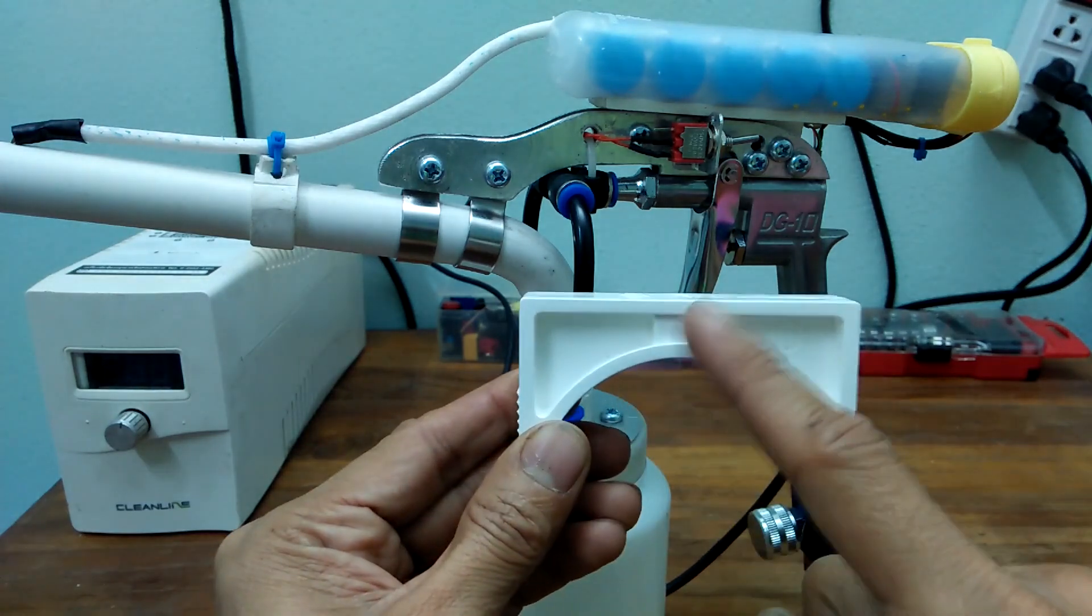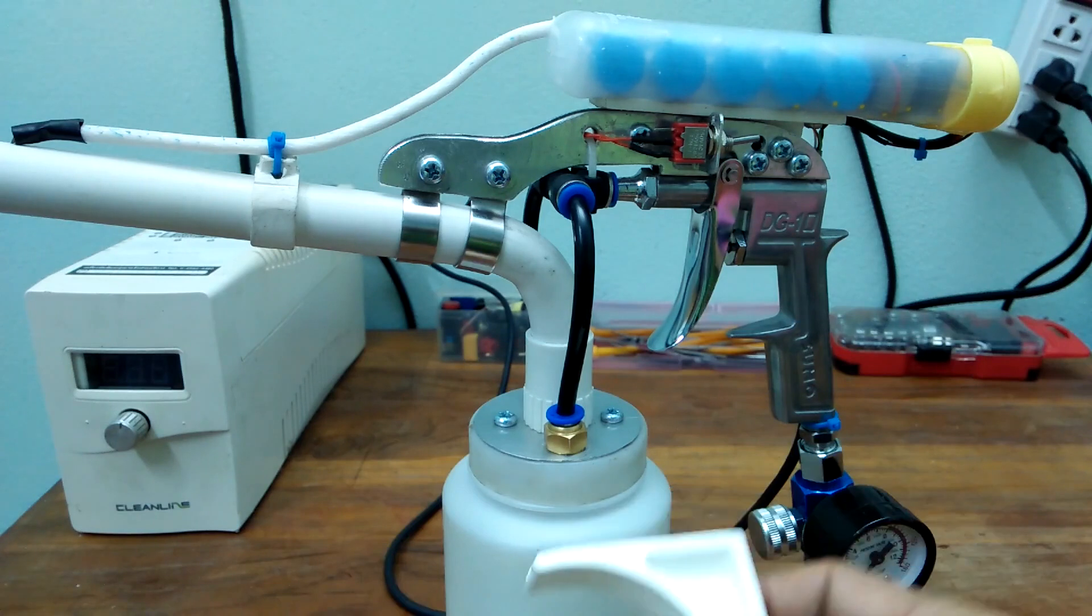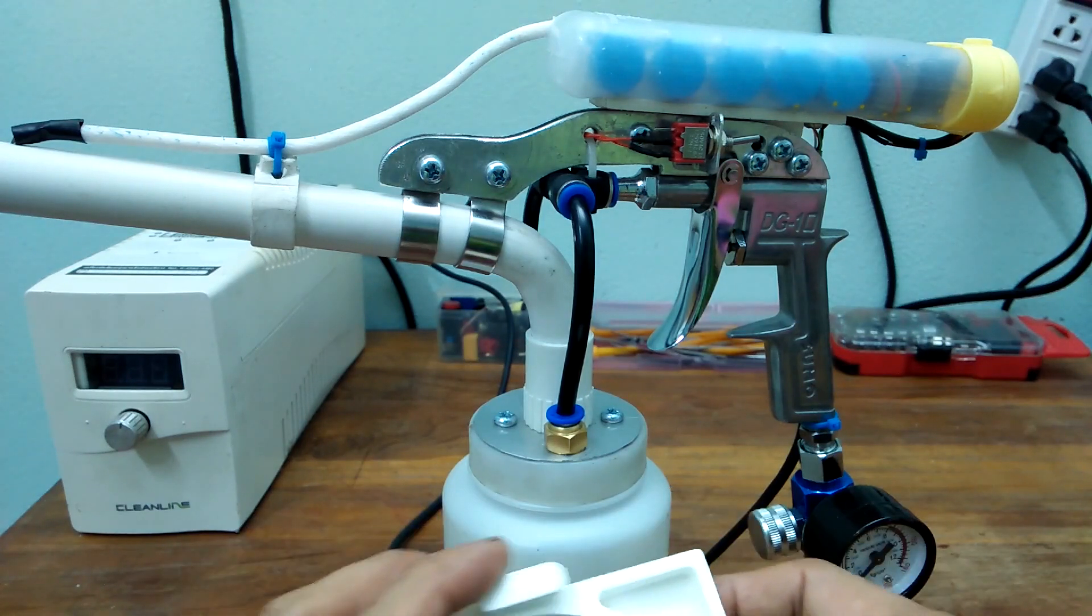I used a hacksaw to cut out the parts and drilled some holes so that the high voltage cascade can be attached with screws and secured to the frame of the gun.